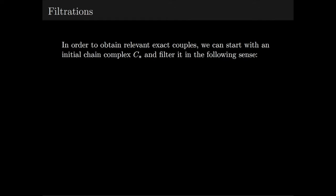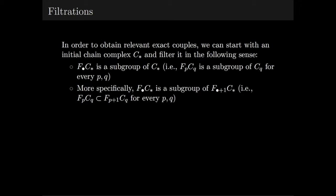A common way of arriving at an exact couple in the first place is to first endow your chain complex with a filtration. So a filtration must satisfy the following properties. F bullet of C star is a subgroup of C star. This notation is very common with spectral sequences and homological algebra in general, but it just means that F_P of C_Q is a subgroup of C_Q for every P and Q. More specifically, we want F bullet of C star to be a subgroup of F bullet plus 1 of C star.